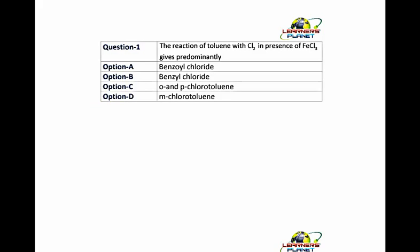The reagent here is FeCl₃, which reacts with chlorine and gives FeCl₄⁻ plus Cl⁺. Now what is the Cl⁺? It is the chloronium ion. It means it is an electrophile.